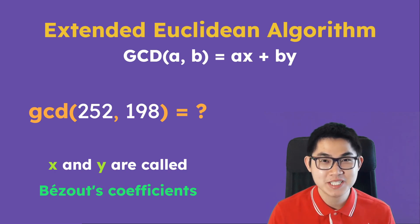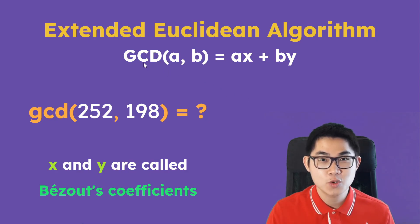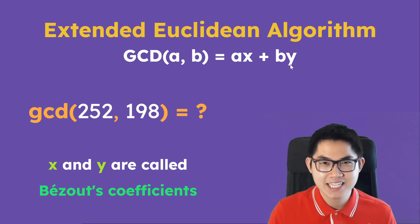In this video, I'm going to explain the extended Euclidean algorithm. This algorithm helps us calculate two things. The first thing is the GCD of two positive integers A and B. The GCD is the greatest common divisor, and after we calculate it, we can express it as A times X plus B times Y.